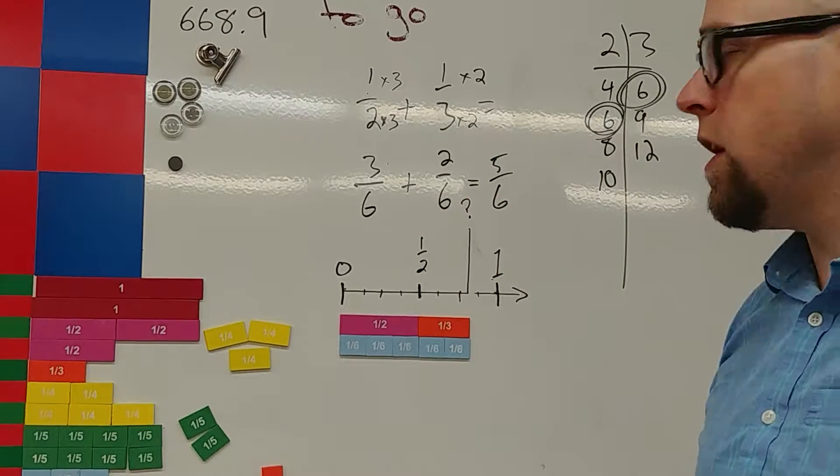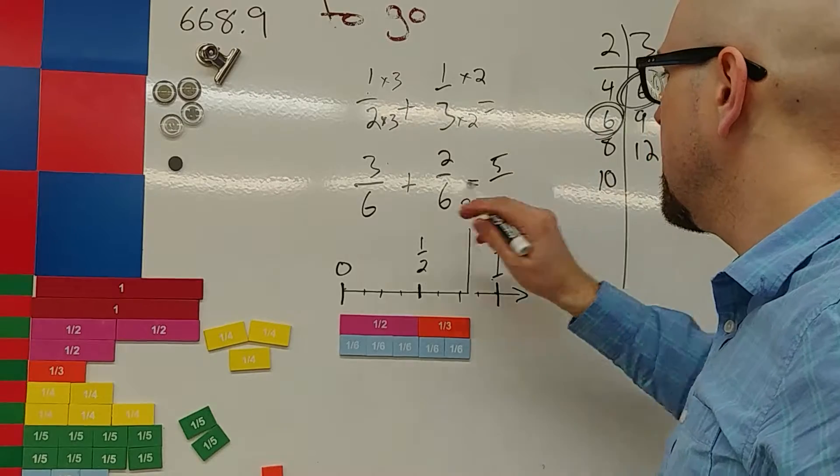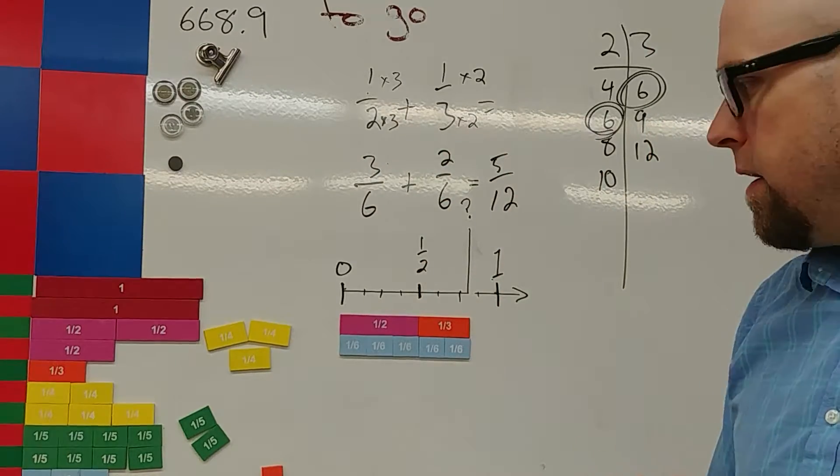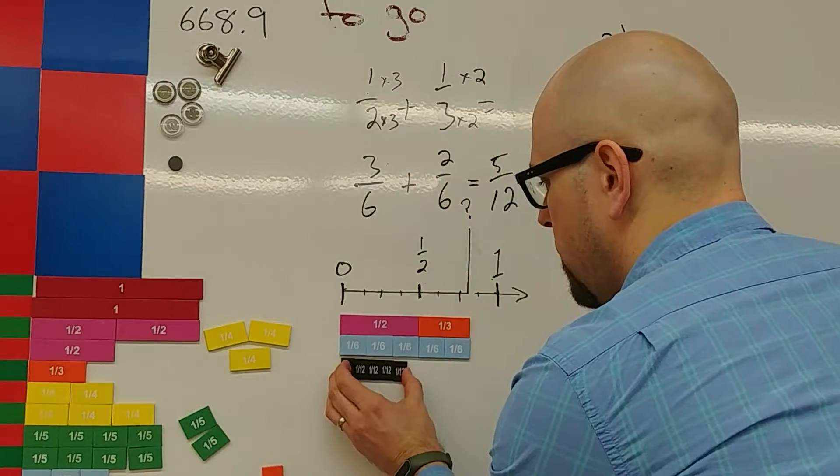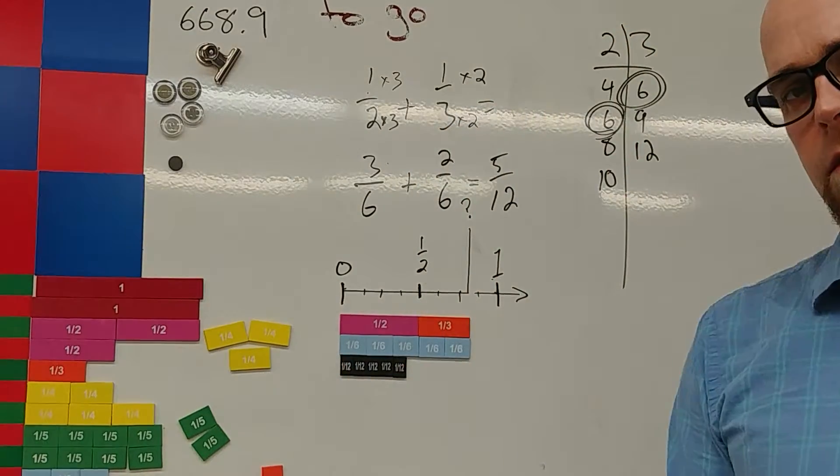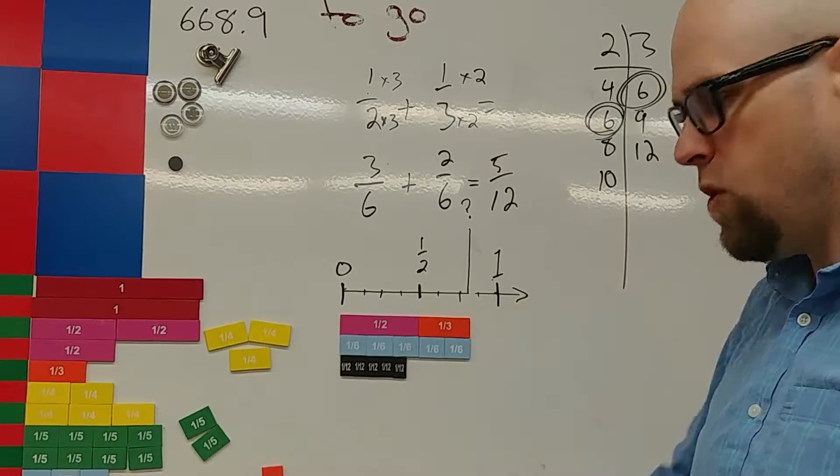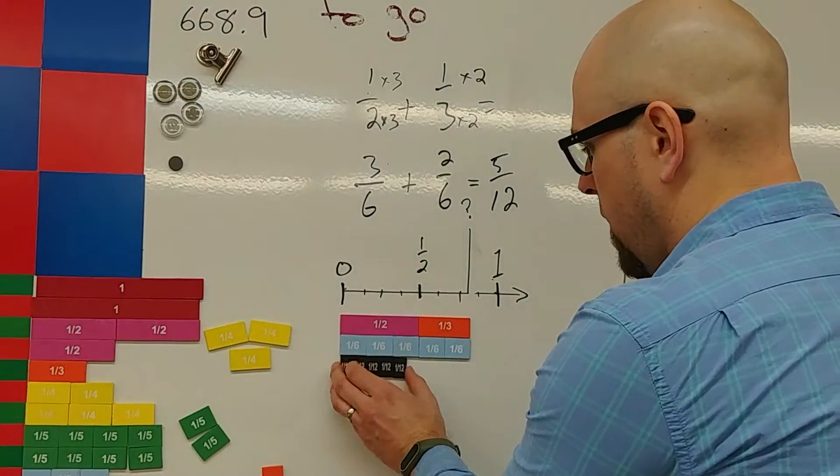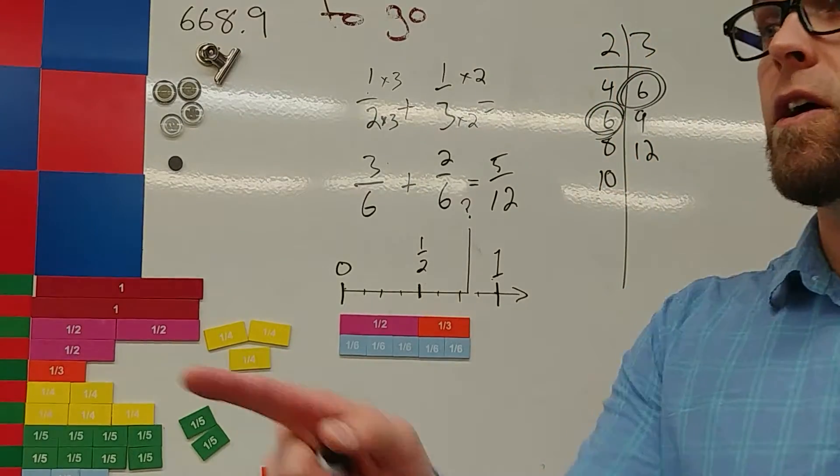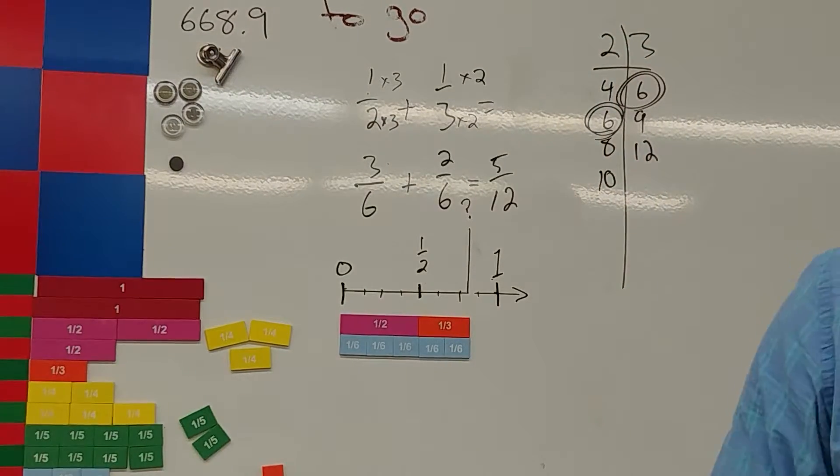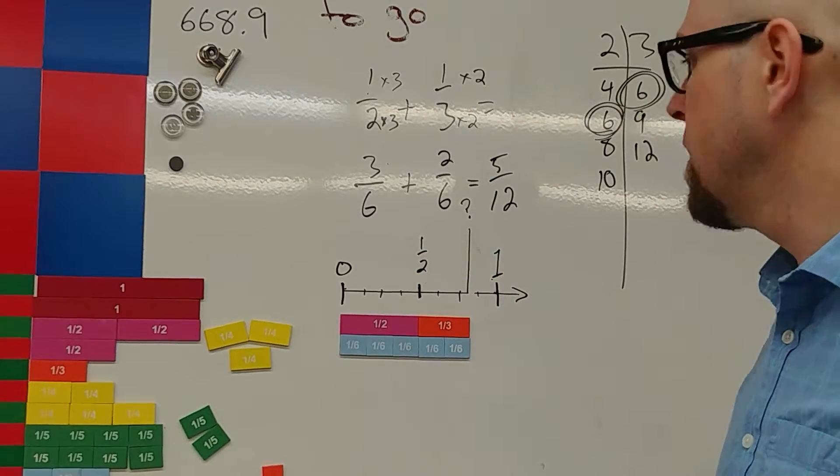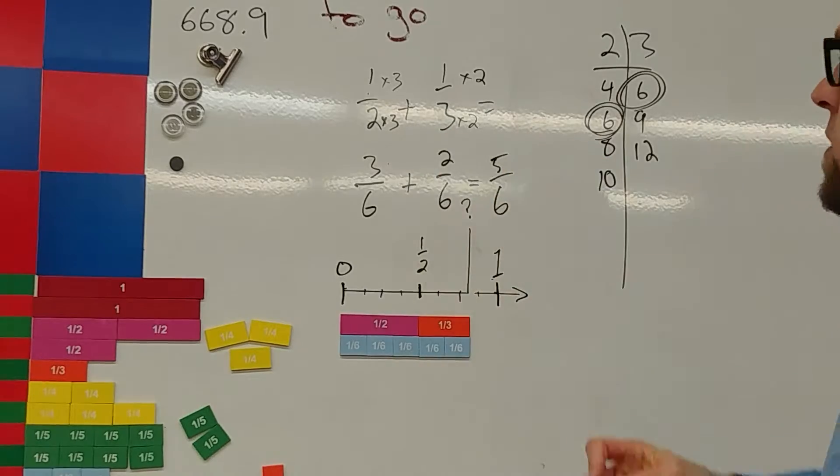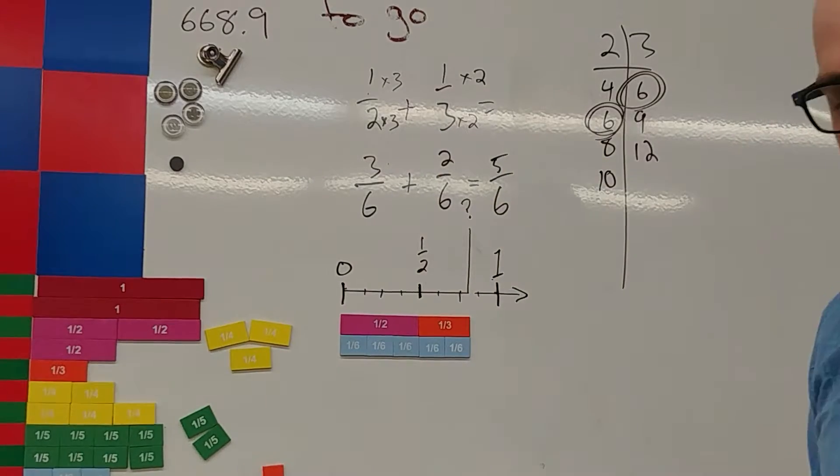Now, don't forget, Johnny makes this mistake often. He goes, three and two is five, and six and six is twelve. But then I say to Johnny, but Johnny, here's five twelfths. Is five twelfths equal to one half plus one third? At which point he goes, well, no. But then I could show, are five sixths? And he goes, yes. So here we have the sixth stays the same. The top gets added. Five over six.